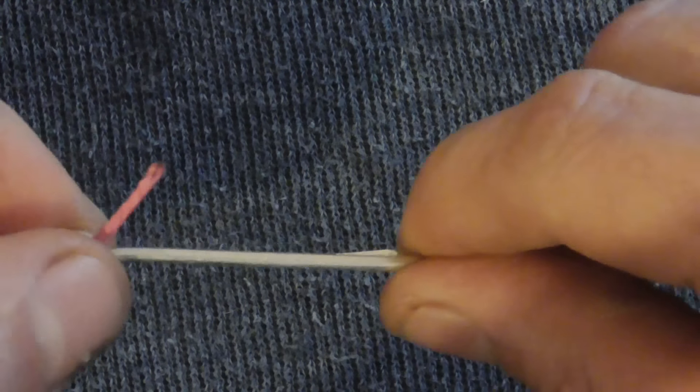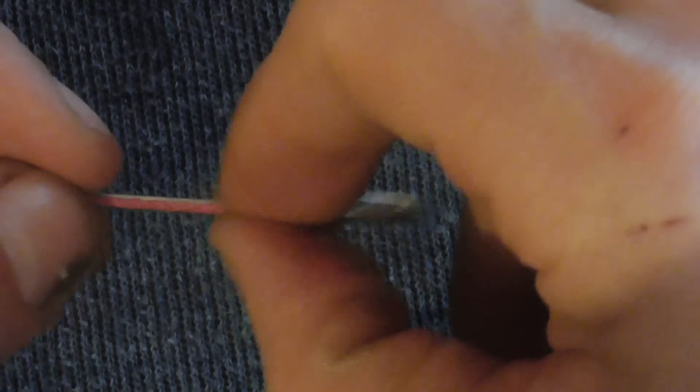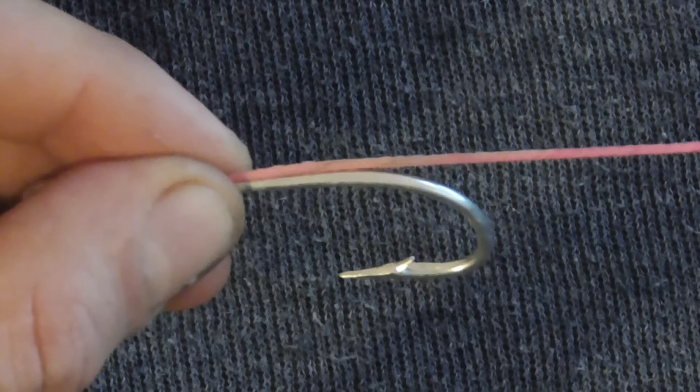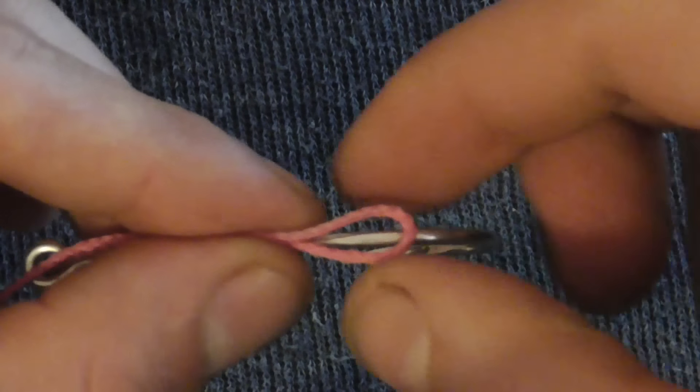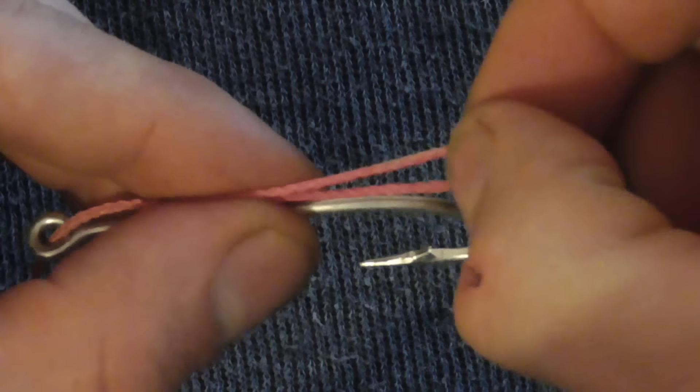Start by just passing the line through the eye of the hook and then feeding out a nice section and folding it down on itself just to form a little loop on the end there.